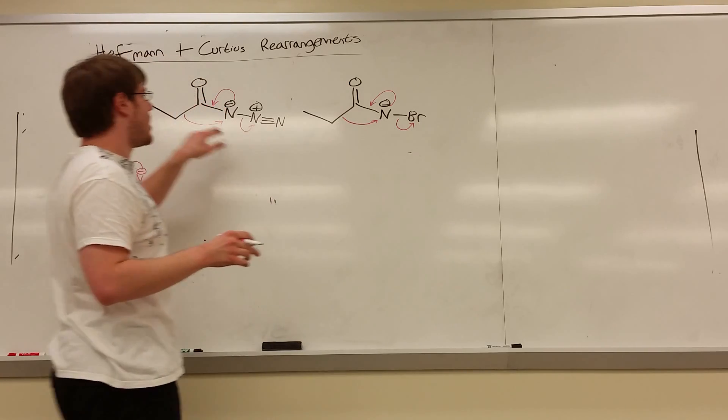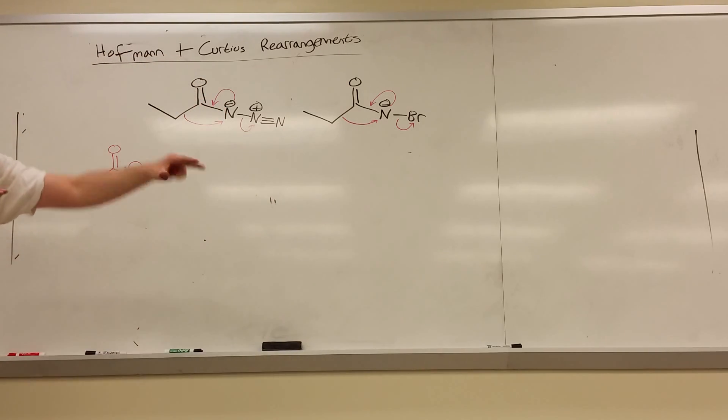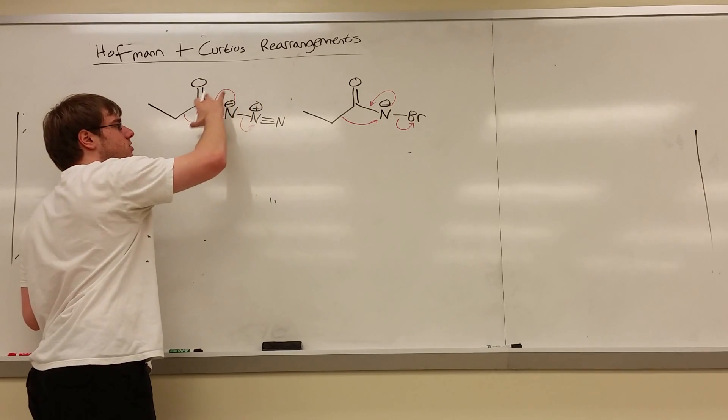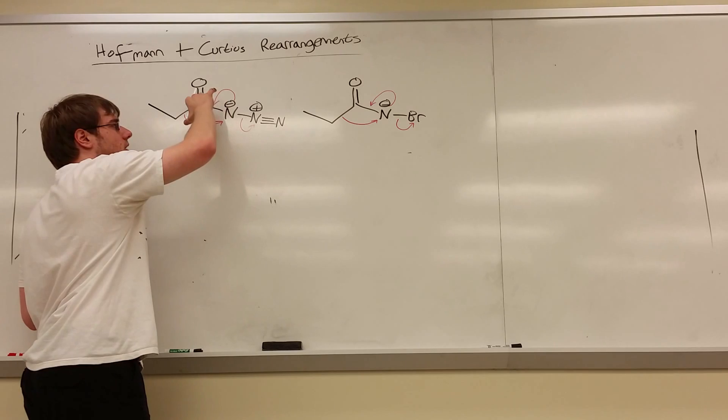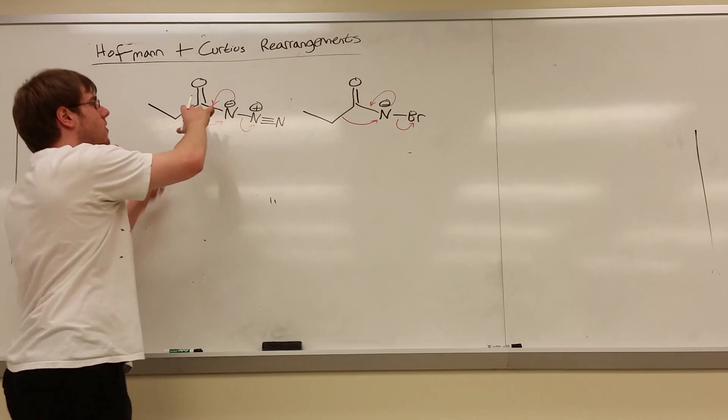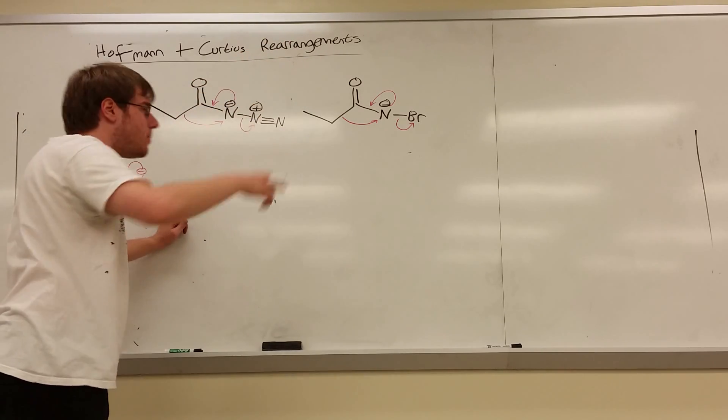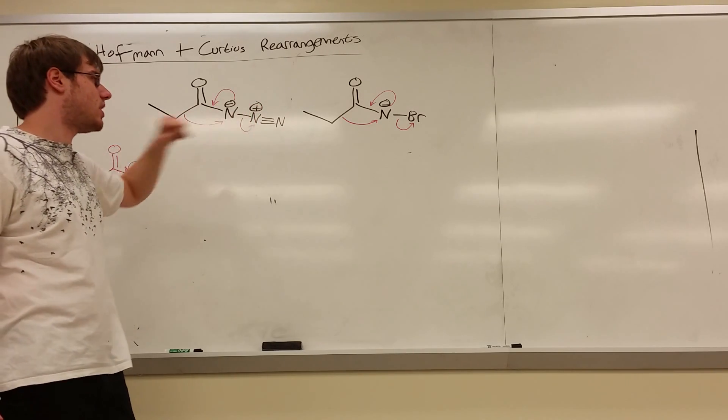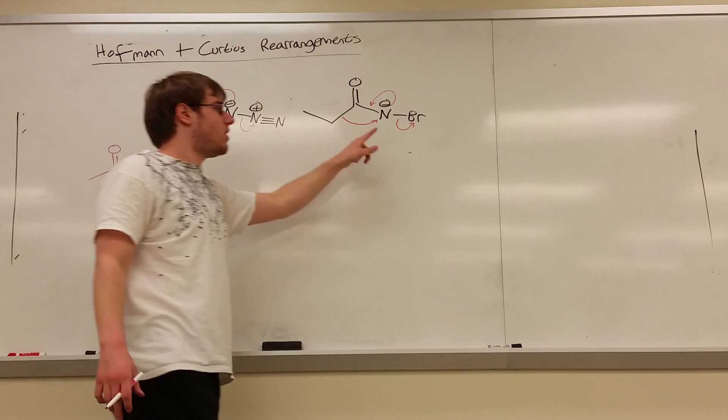Now my question for you is why does that oxygen normally swing up? The reason, of course, is if we just did this one arrow, there would be five bonds on that carbon. A bond has to break to make room for it. So here's the difference between what we usually expect and what happens in these rearrangements. Yes, that N minus is going to swing down to try and make that carbon-nitrogen double bond. But rather than the oxygen bond swinging up, it's a different bond that breaks.